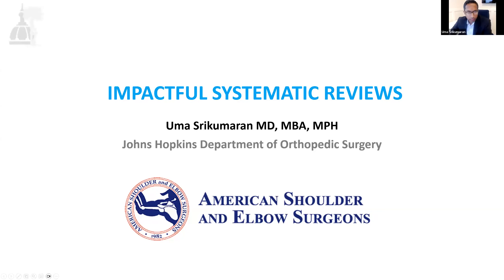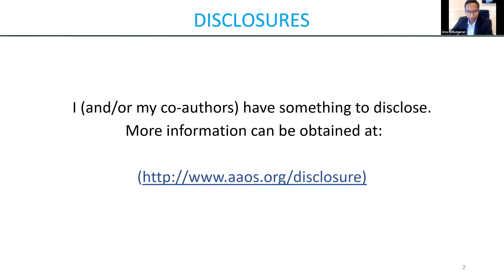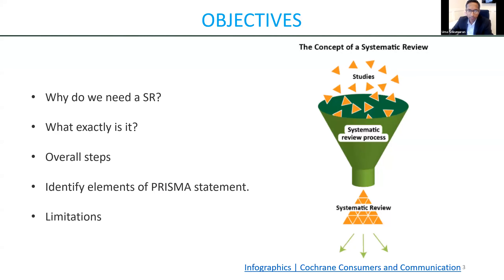Thanks for the invite. I'm looking forward to learning a lot myself. I'm going to be starting with systematic reviews. The objectives tonight: first I'm going to ask why we even need systematic reviews, then define what they are, outline the overall steps involved, identify the elements of the PRISMA statement — a 27-item checklist when presenting or publishing systematic reviews — and end with some limitations inherent in this type of research.